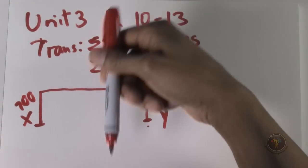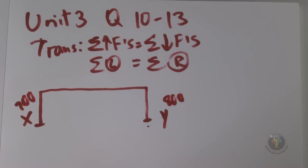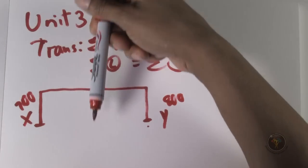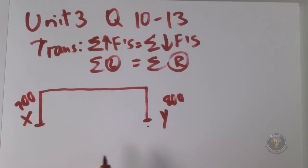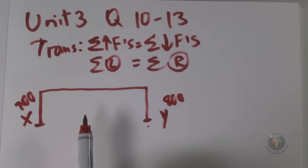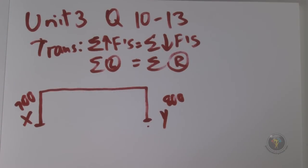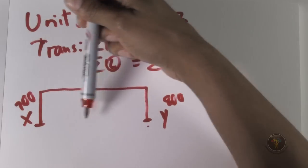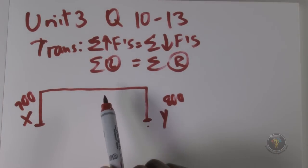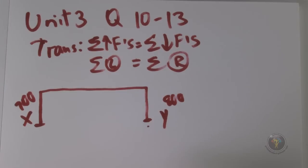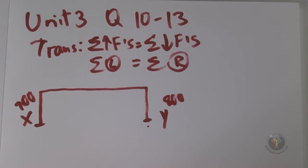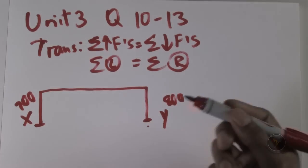We have a total of 1500 newtons going down. The question asks for the total force exerted by the floor on the bed. By action-reaction, there must be exactly 1500 newtons going up. If there were even one extra newton, the person would accelerate upwards — impossible. If the floor pushed up with less, the person would accelerate downwards due to a net downward force.